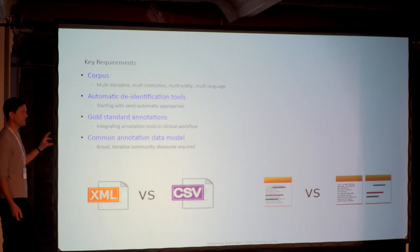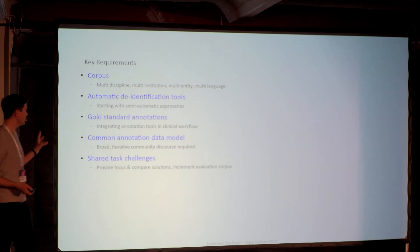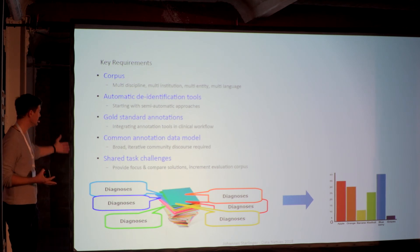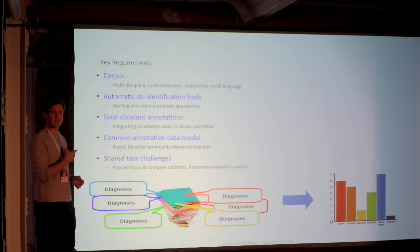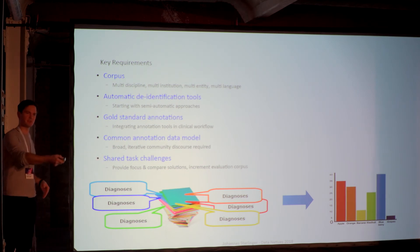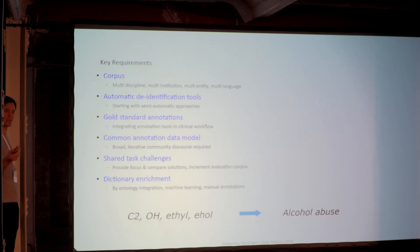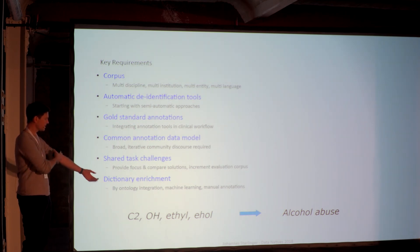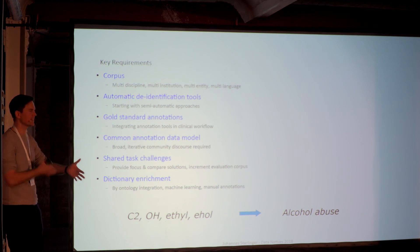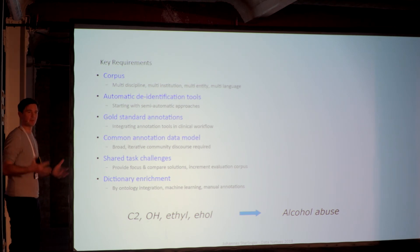We need common annotation data models — there's still a lot of community discourse about how we store annotations on text. We need shared test challenges so that when we have corpora, we put them out there like Kaggle does with structured data; this is happening for English language text but not for other languages. We need shared test challenges where people can take on the data and provide solutions that should then be open. We also need tools for dictionary enrichment to tackle the synonym and abbreviation problem — right now every group entering this field is starting over again by itself, and nobody publishes their enriched ontologies.